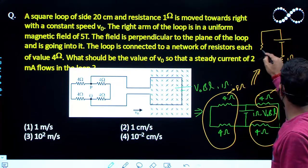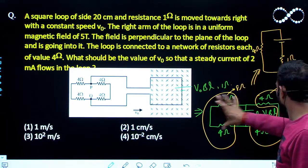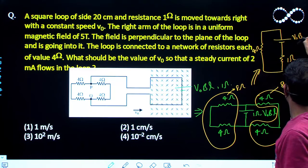So this will be something like this, 4 ohm. 4 ohm is the equivalent resistance of this 8 ohm and this 8 ohm which are in parallel to each other. And this is your V0 BL.